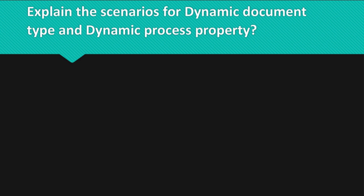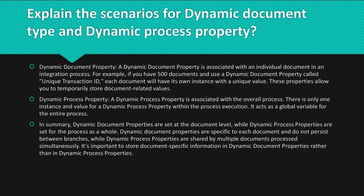Question: Explain the scenarios for dynamic document type and dynamic process property. Answer — Dynamic document property: A dynamic document property is associated with an individual document in an integration process. For example, if you have 500 documents and use a dynamic document property called unique transaction ID, each document will have its own instance with a unique value. These properties allow you to temporarily store document-related values.